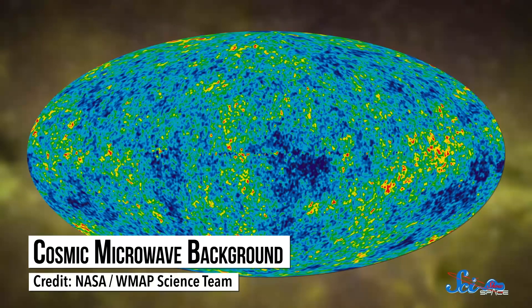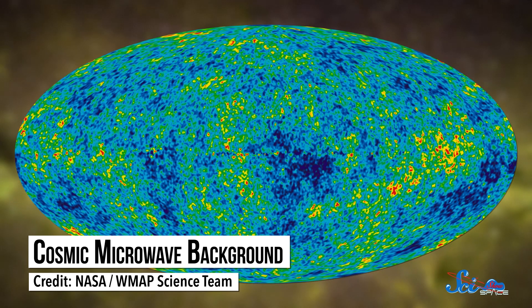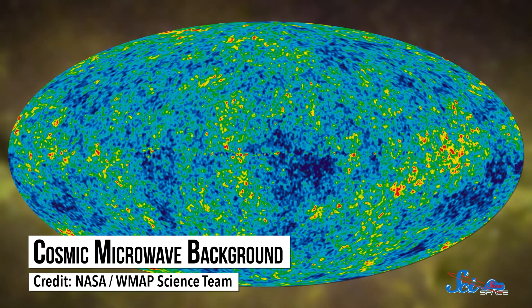We call it the cosmic microwave background, and it's incredibly useful for astronomers. It's helping us learn more about things like the structure of the early universe and how matter is distributed through space.